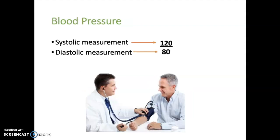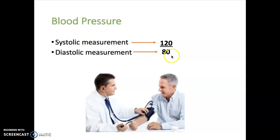Blood pressure is the force exerted by blood on blood vessel walls, typically measured in the brachial artery in the upper arm. This pressure changes depending on whether the heart is contracting or relaxing. Systole means contraction and diastole means relaxation. The systolic measurement is the top number, measured when the heart is contracting. The diastolic measurement is the bottom number, measured when the heart is relaxing. A normal blood pressure reading is about 120 for the systolic number and 80 for the diastolic.